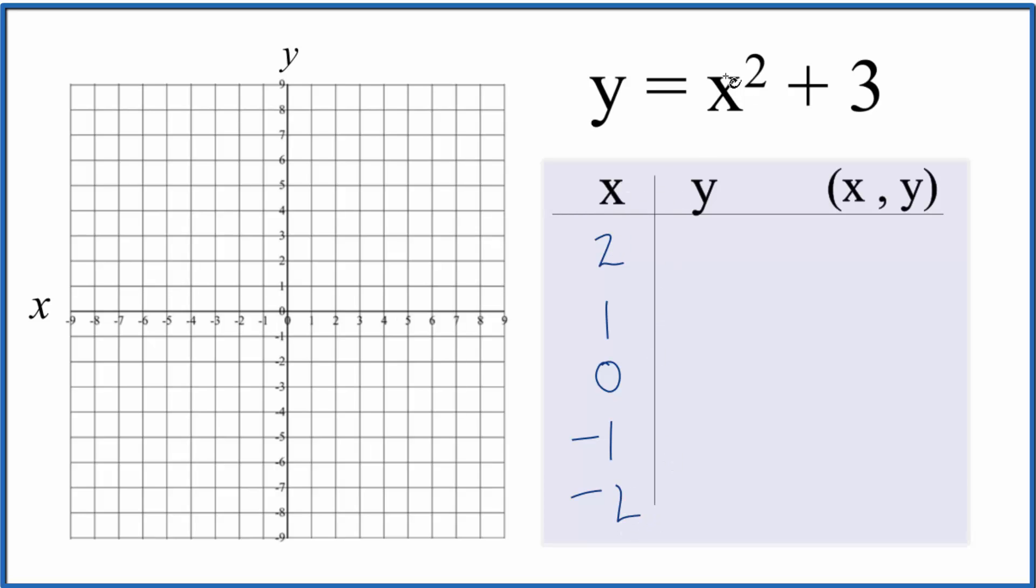If we put 2 in for x, 2 squared is 4 plus 3, we get 7. Put 1 in, 1 squared is 1, plus 3 gives us 4. 0 squared is just 0, so we end up with 3 here.